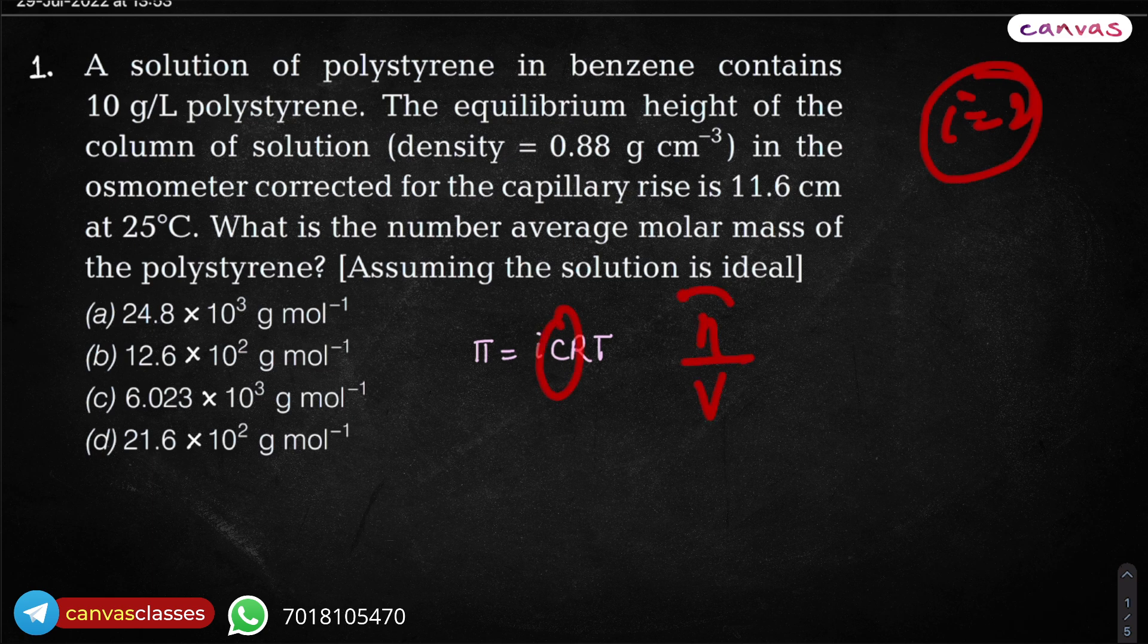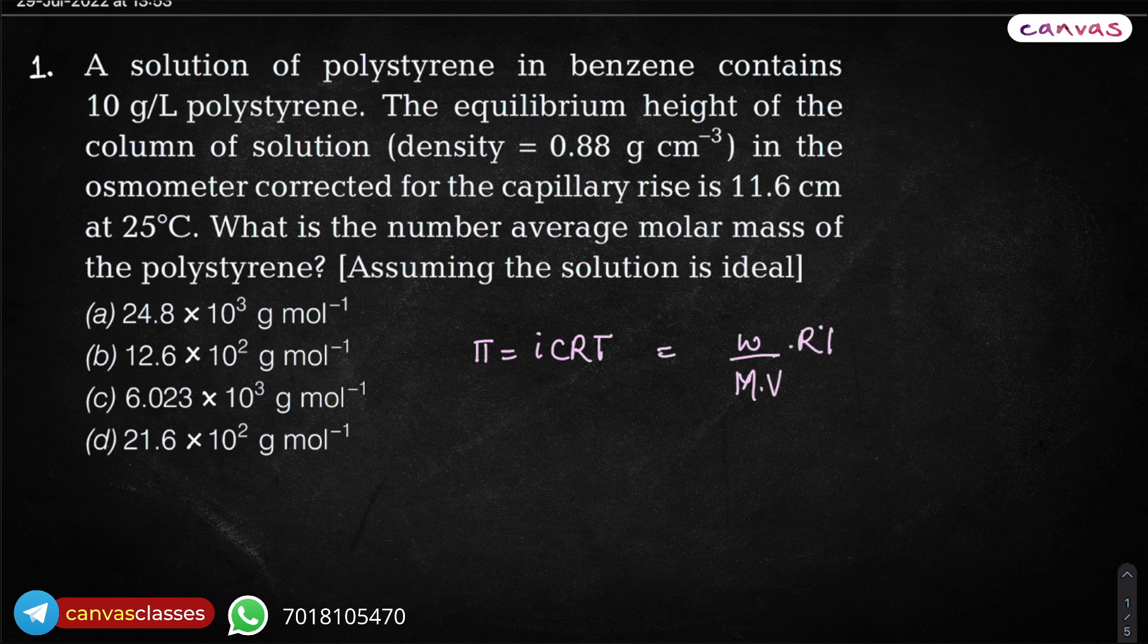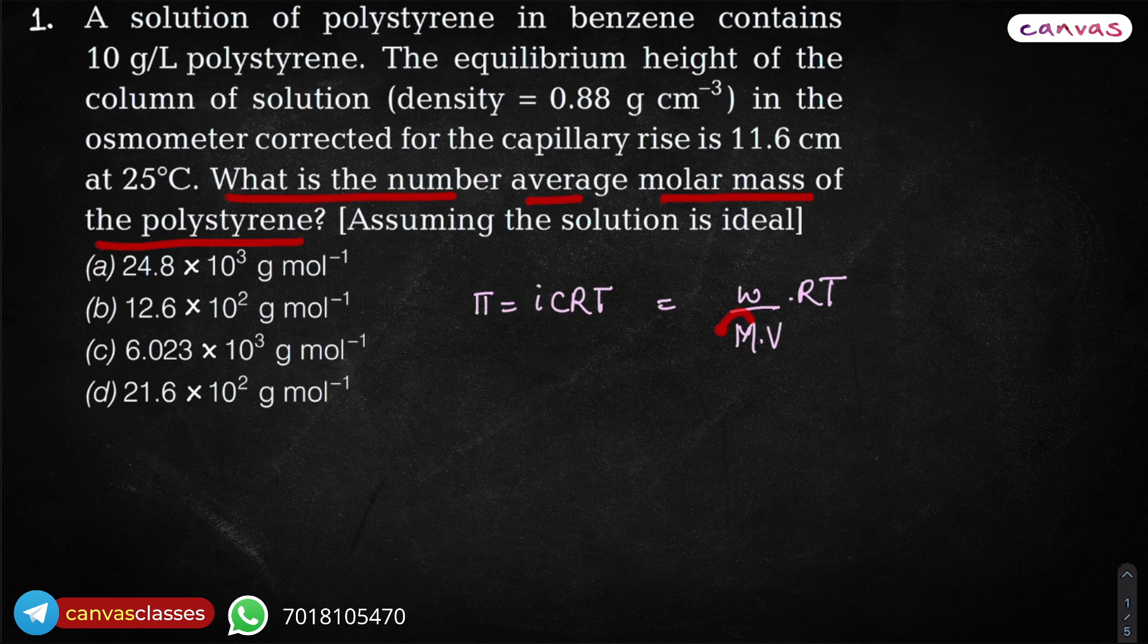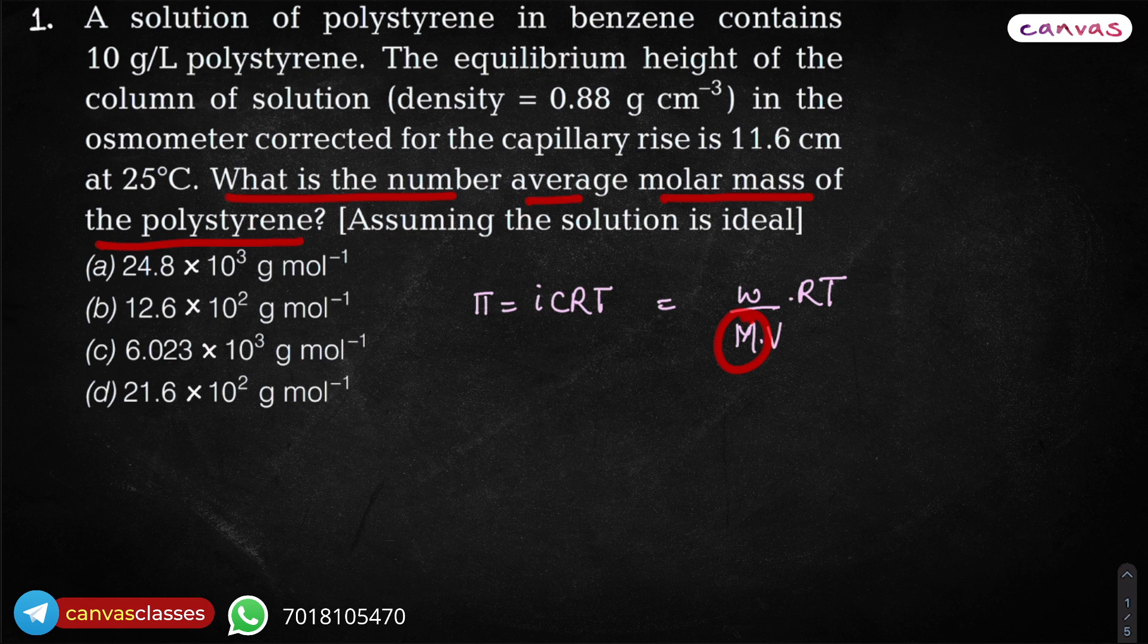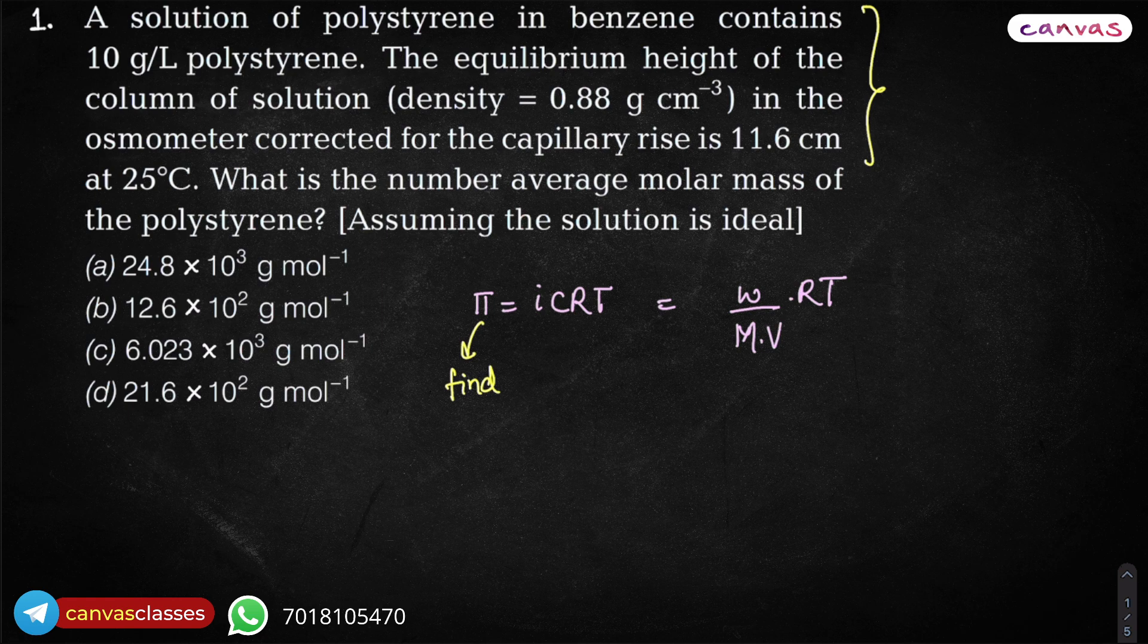What is C? Concentration, number of mole upon volume. What is number of mole? Given weight upon molar weight. So this can be written as given weight upon molar weight into volume into RT. Now, we need to calculate what is the number average molar mass of the polystyrene - so molar mass. This is unknown. π is also unknown. So we have two unknowns in this given equation, so we need to calculate at least one. From the given data, we need to find π.